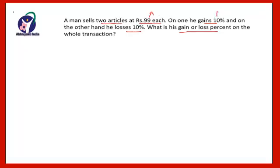When the gain and loss percent are the same, remember there is always a loss. That loss will be (10 × 10) ÷ 100, which equals 1 percent. Therefore, in this transaction the loss will be just 1 percent.